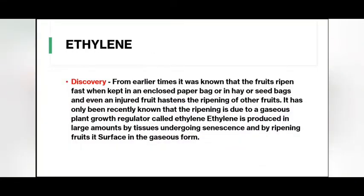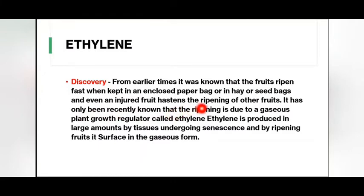Regarding ethylene and its discovery: from earlier times it was known that fruits ripen fast when kept in an enclosed paper bag, or in hay or seed bags, and even an injured fruit hastens the ripening of other fruits. It has only been recently known that this ripening is due to a gaseous plant growth regulator called ethylene. Ethylene is produced in large amounts by tissues undergoing senescence and by ripening fruits, and it exists in gaseous form.